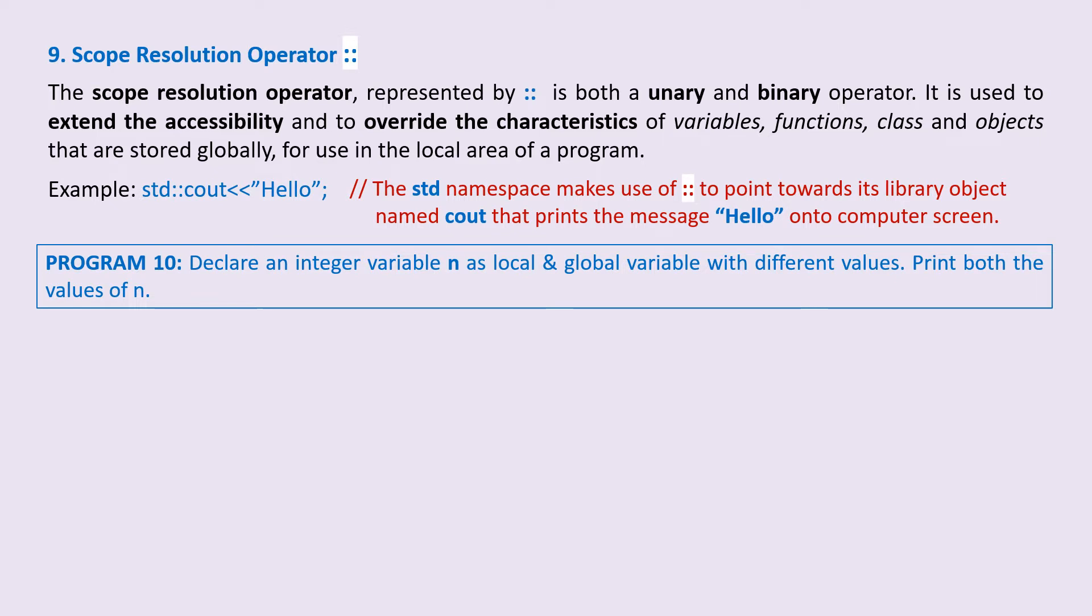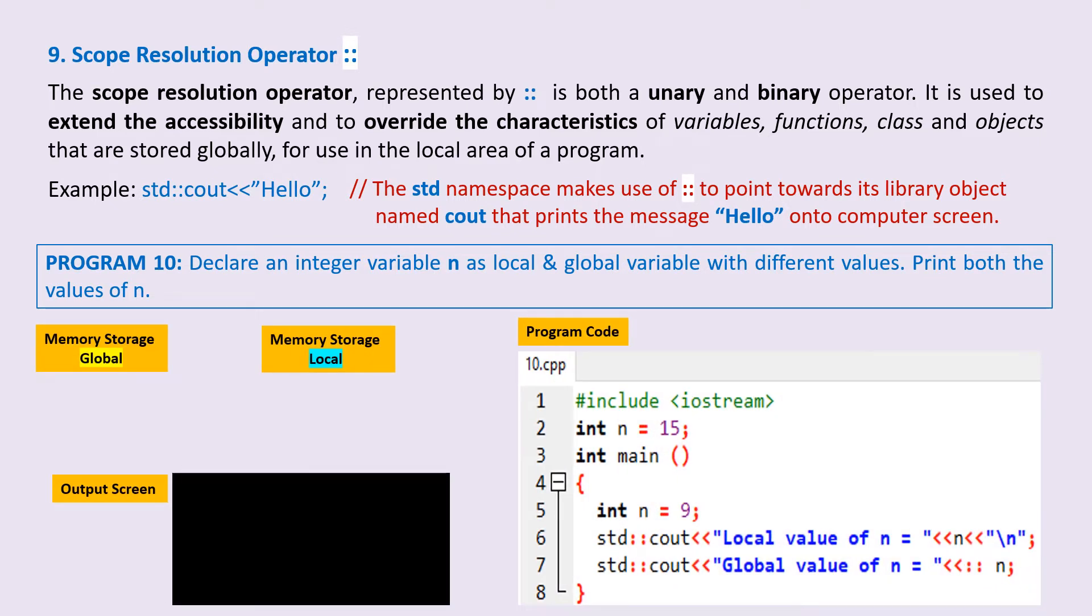So here is our program visualizing panel. We have the program code, and I have saved it as 10.cpp. We have two memory storage locations. One is for the global variable, and the other is for local variable. The output screen will preview our input output operations. Okay, let's start.